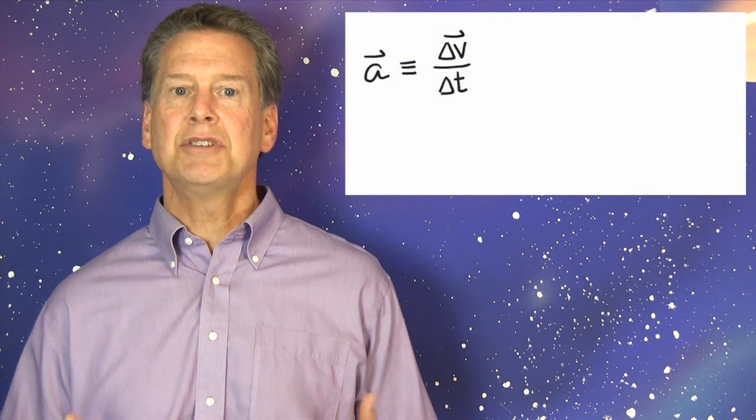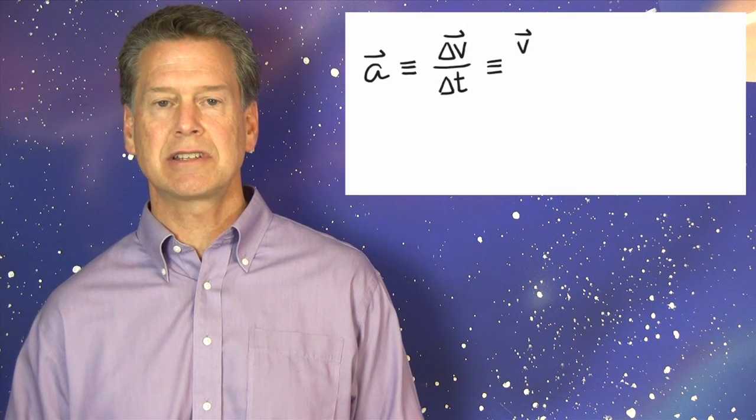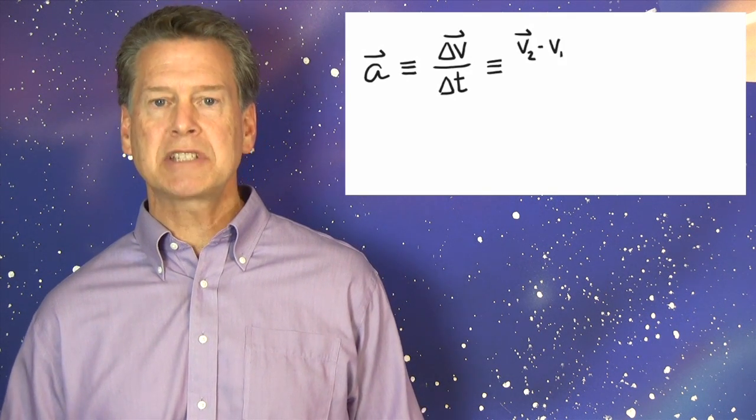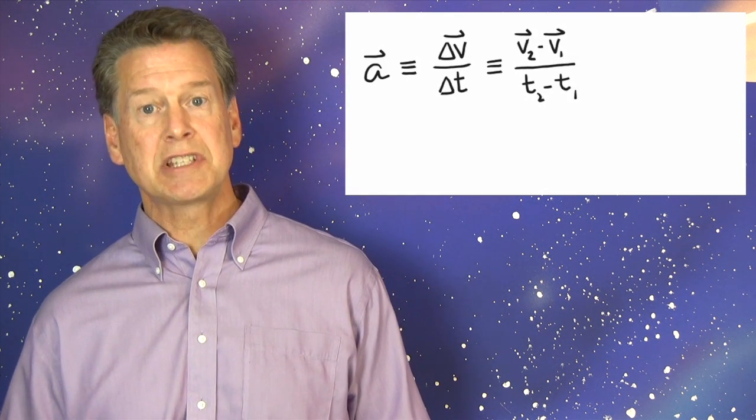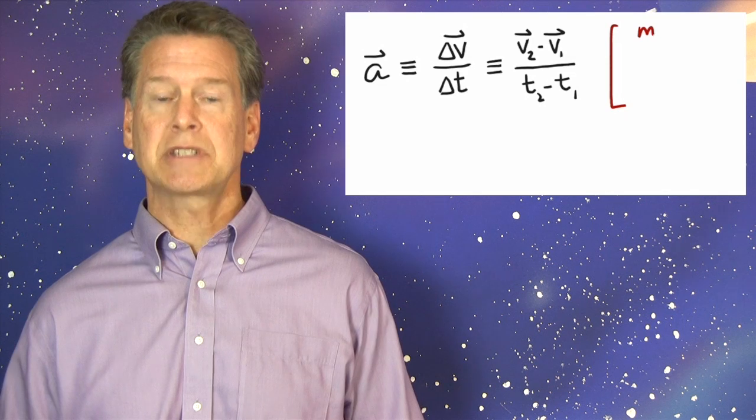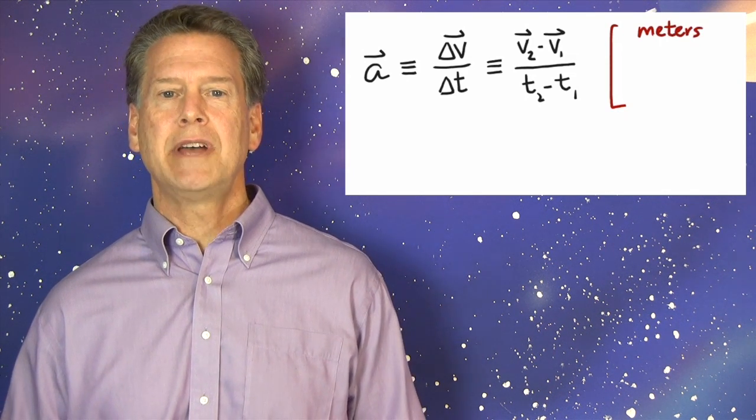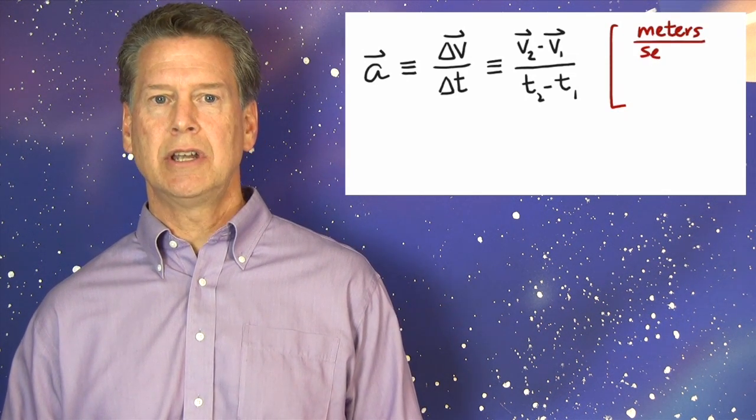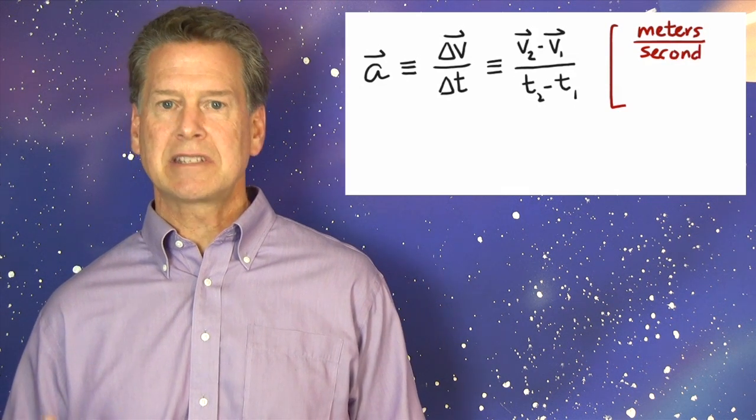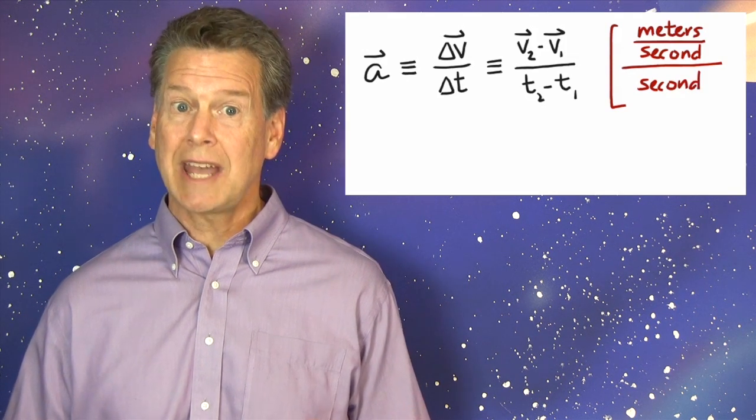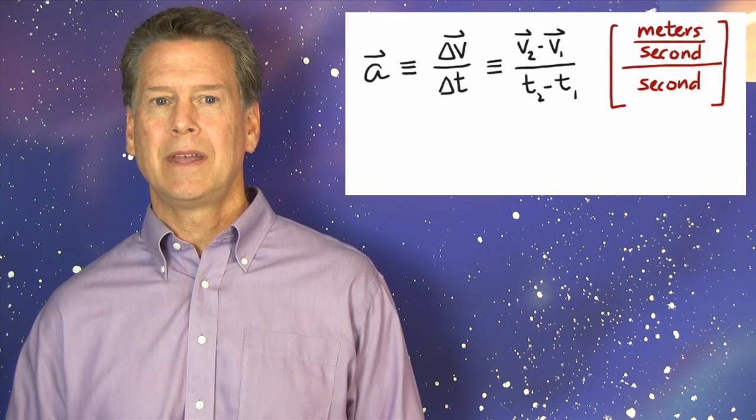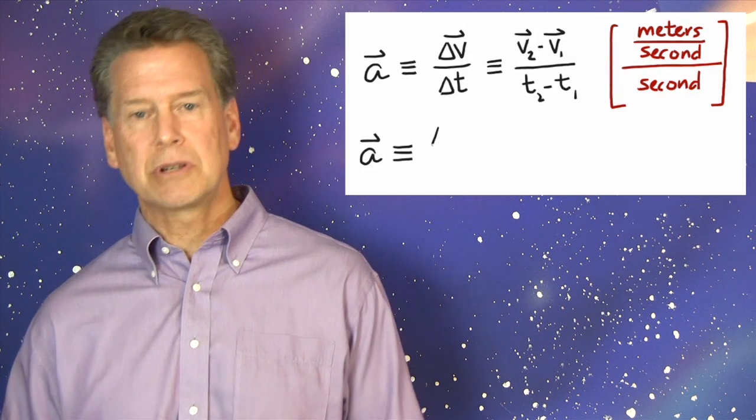Our mathematical definition also tells us acceleration's units of measurement. Since the numerator is a difference between two velocities, its units must be meters per second. And since the denominator is a difference between two times, its units must be seconds. Altogether, then, the units of acceleration must be meters divided by seconds divided by seconds. Those seconds don't cancel, by the way. Check your math. That's meters per second, per second.